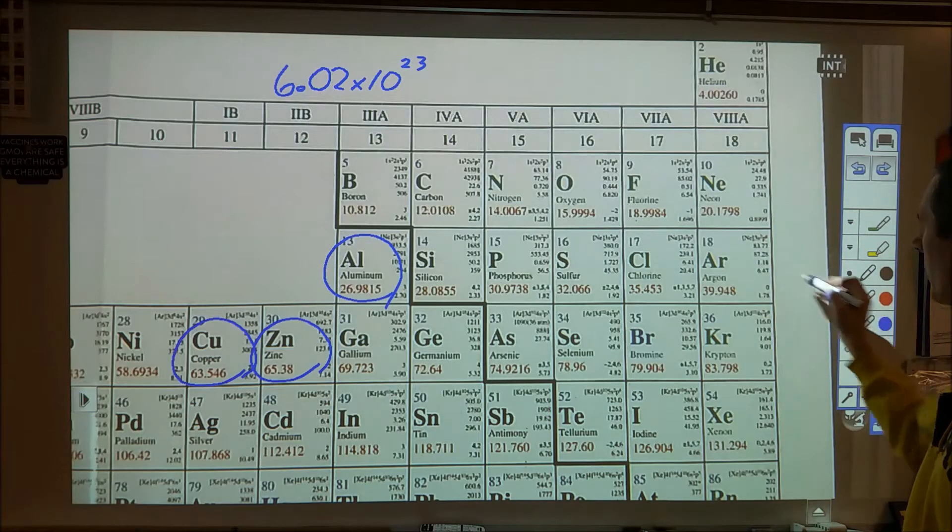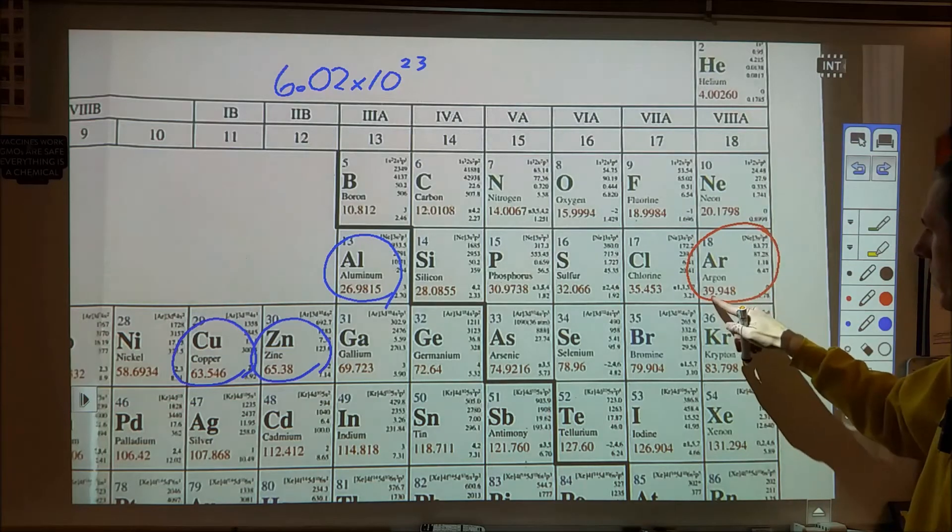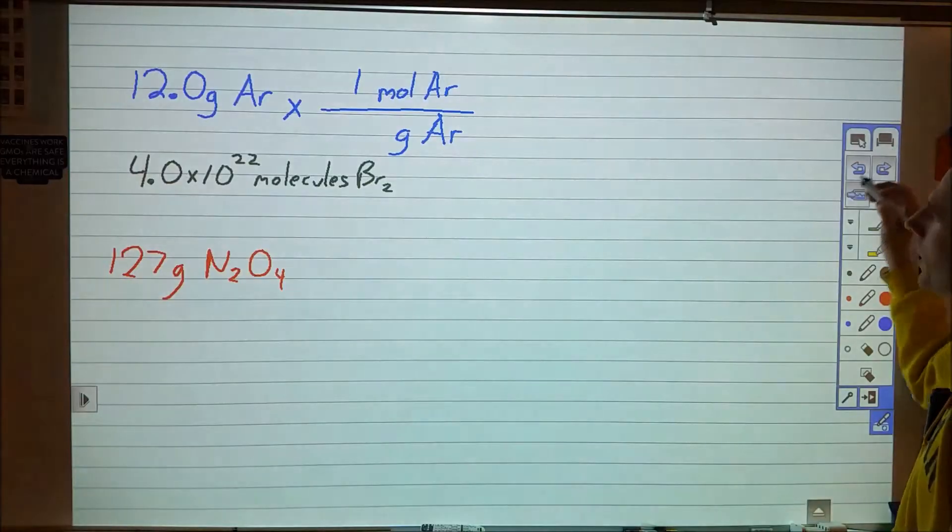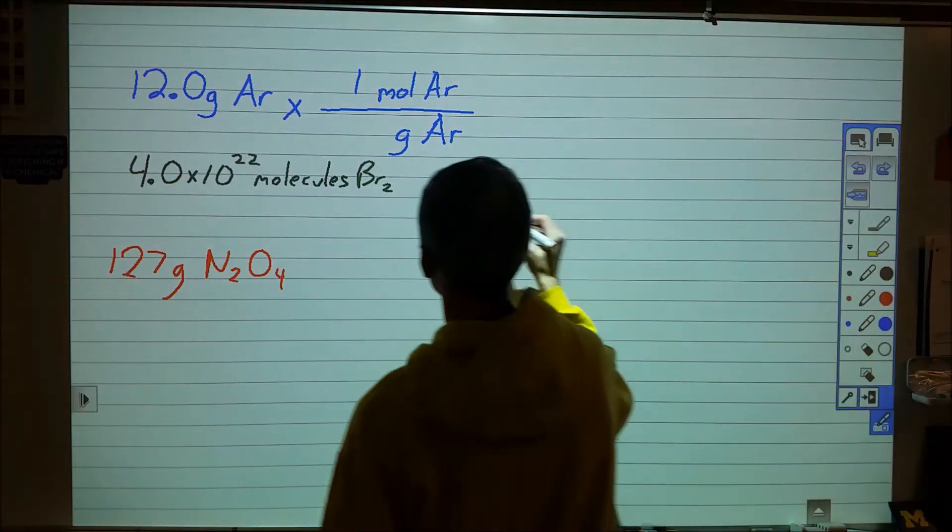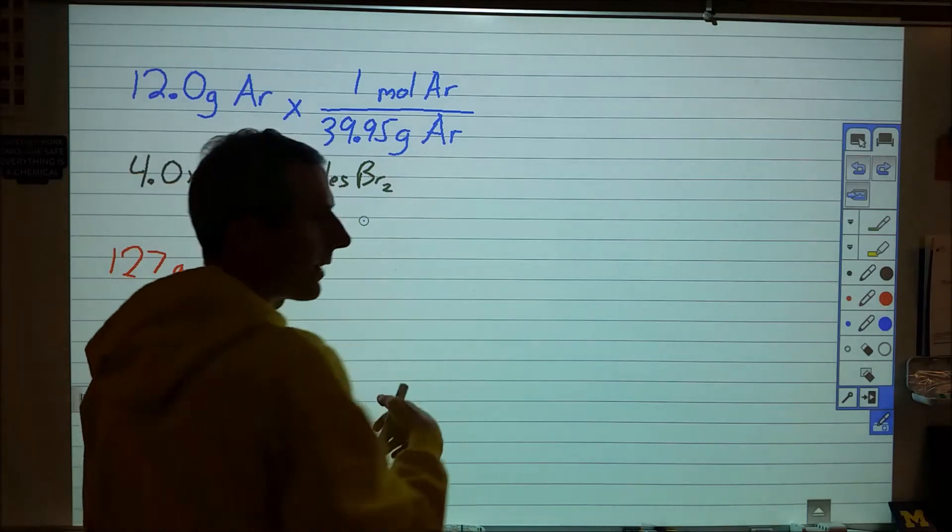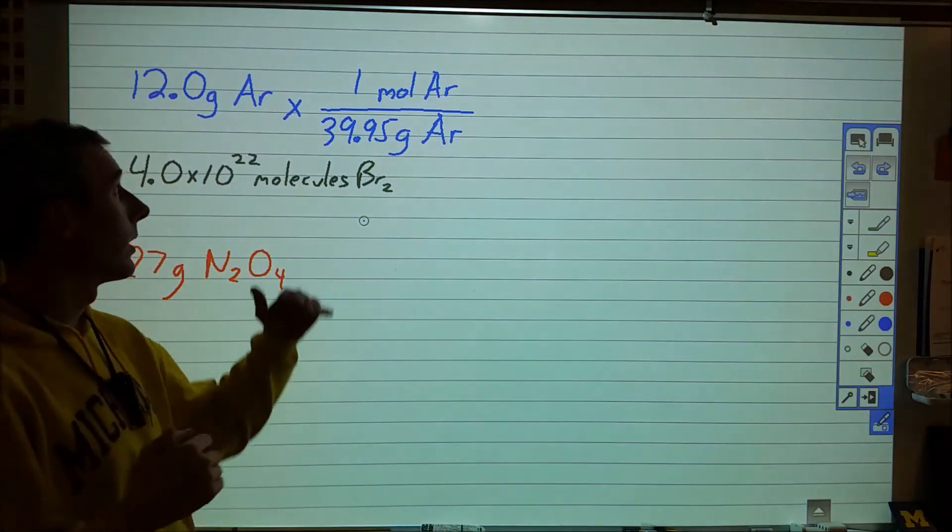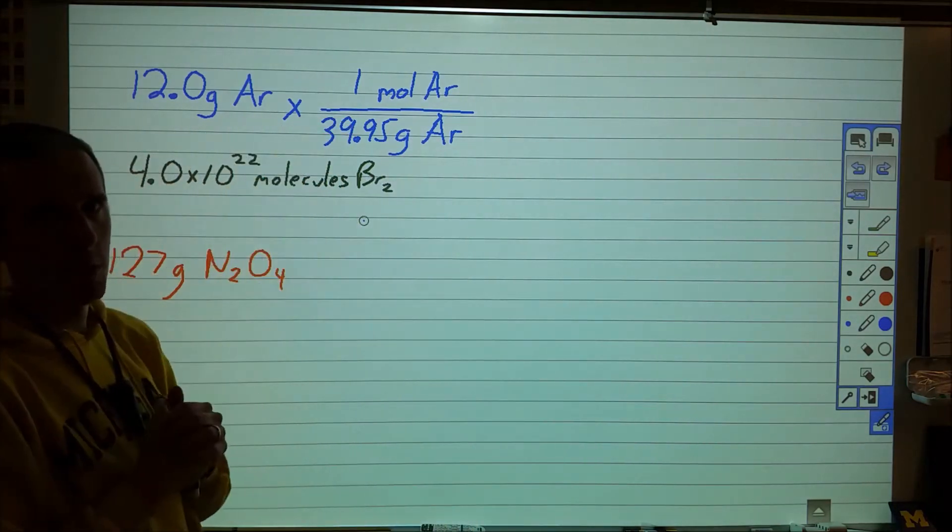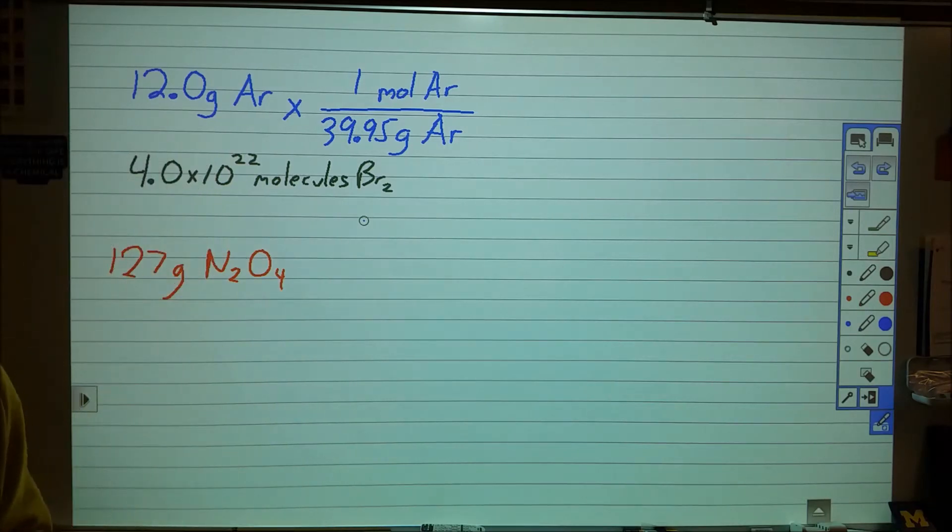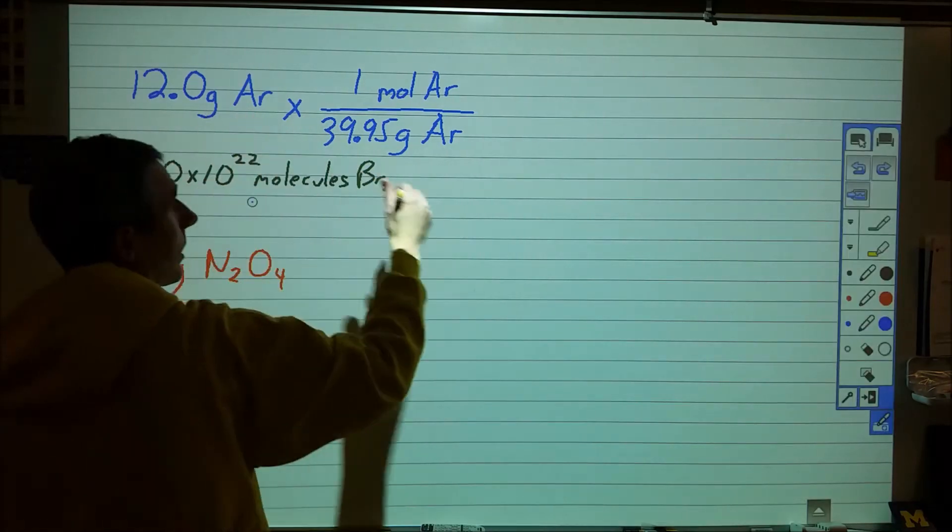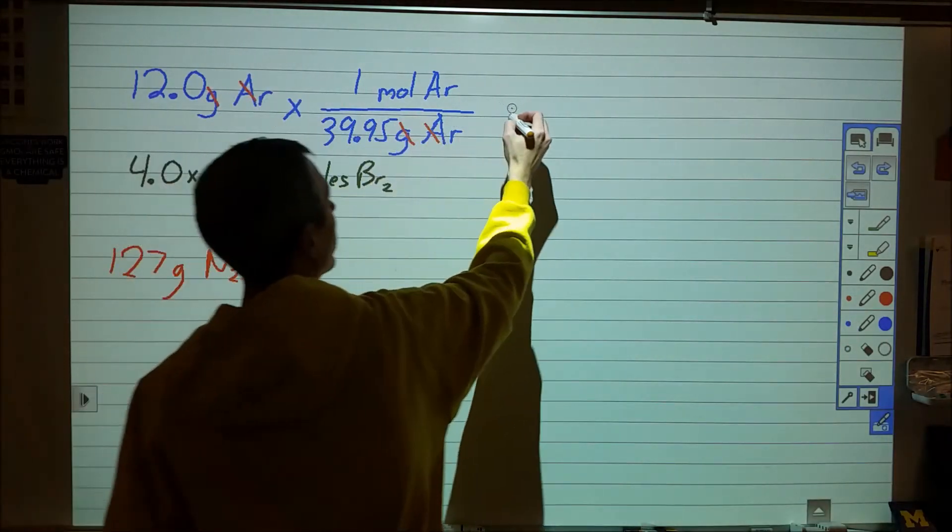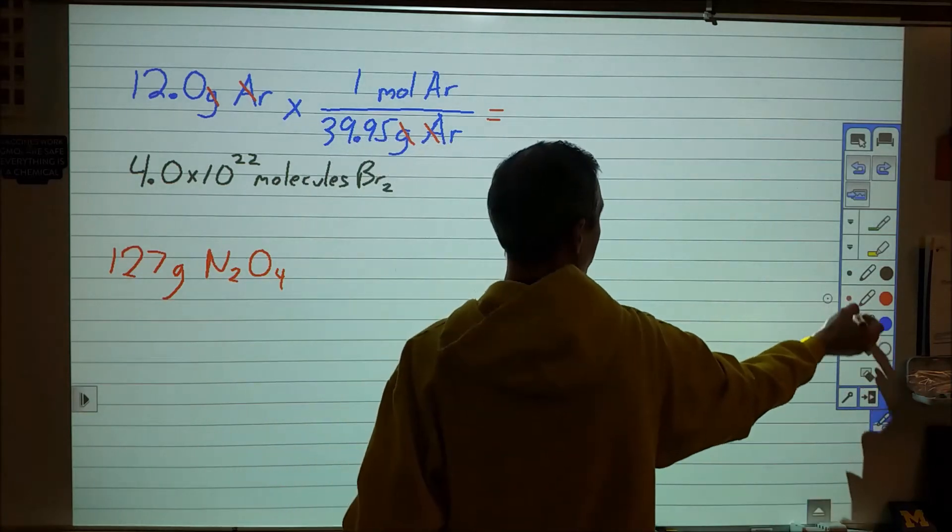And one mole of anything in terms of mass we can find in the periodic table. So we're going to flip back to here and look at argon. Because right here, which is 39.948, we're going to round that to two decimal places. So 39.95. So what that number means is that there are 39.95 grams of argon per mole of argon or per 6.02 times 10 to the 23rd atoms of argon. So what I can do with that is I can take my grams of argon and in terms of units these cancel with these and I'm left with moles of argon.